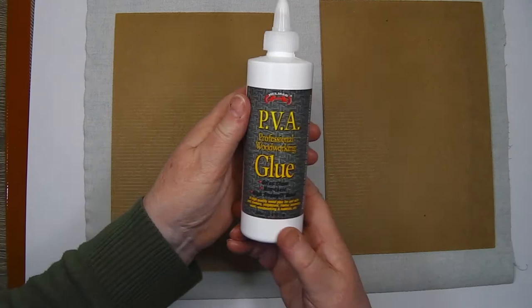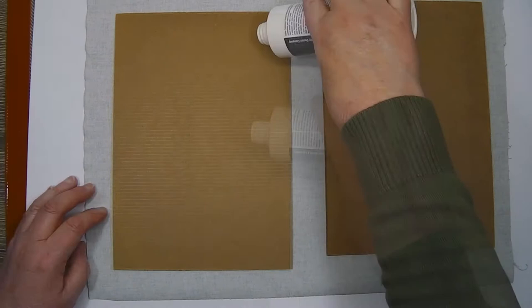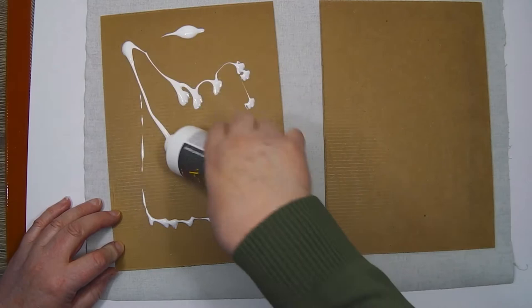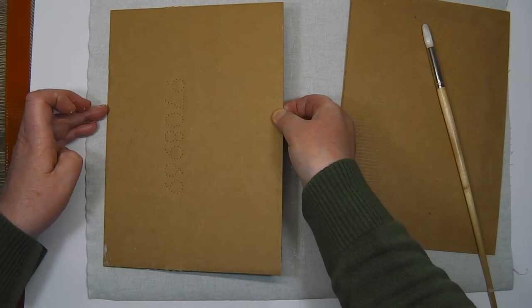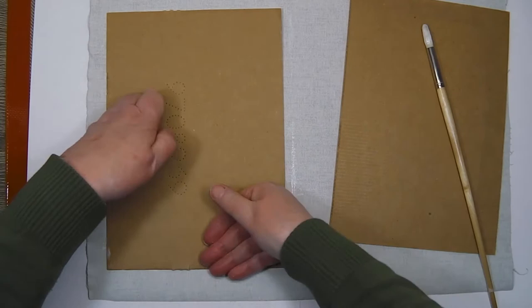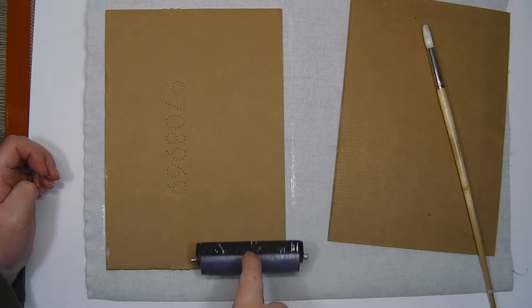Here I'm just applying rather generously Helmar PVA glue, which is my favorite good quality PVA. It's one that's recommended by libraries and for book repairs and book covers, and I really like the permanency of the glue.